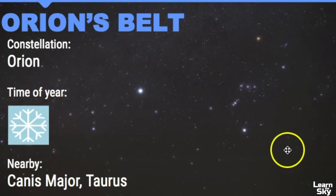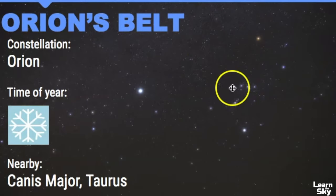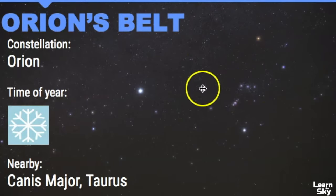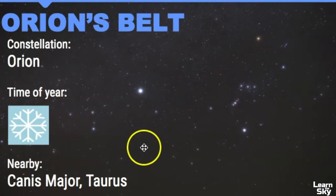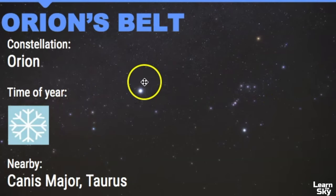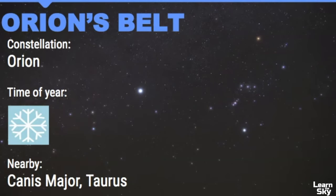Here is Orion — we have the belt stars right here and they can guide you right towards Canis Major. This really bright star is called Sirius, and it's the brightest star in the night sky.